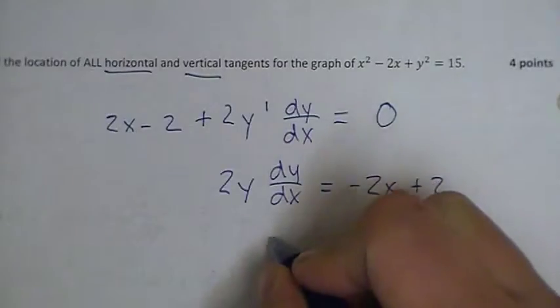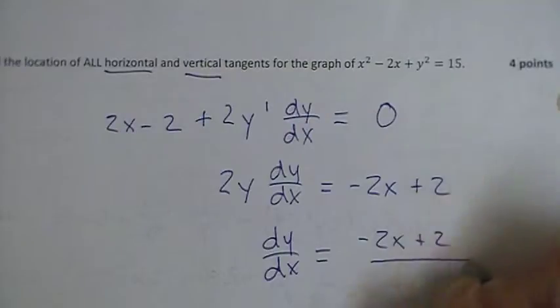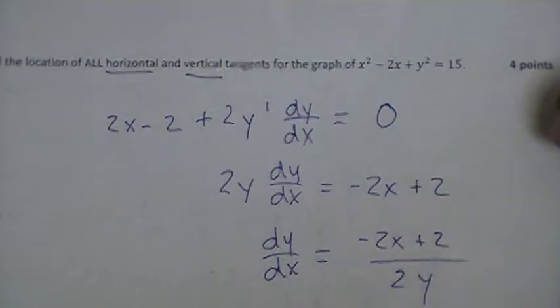And then dy/dx is going to end up being -2x + 2 all over 2y. Divide each side by 2y to isolate the dy/dx.